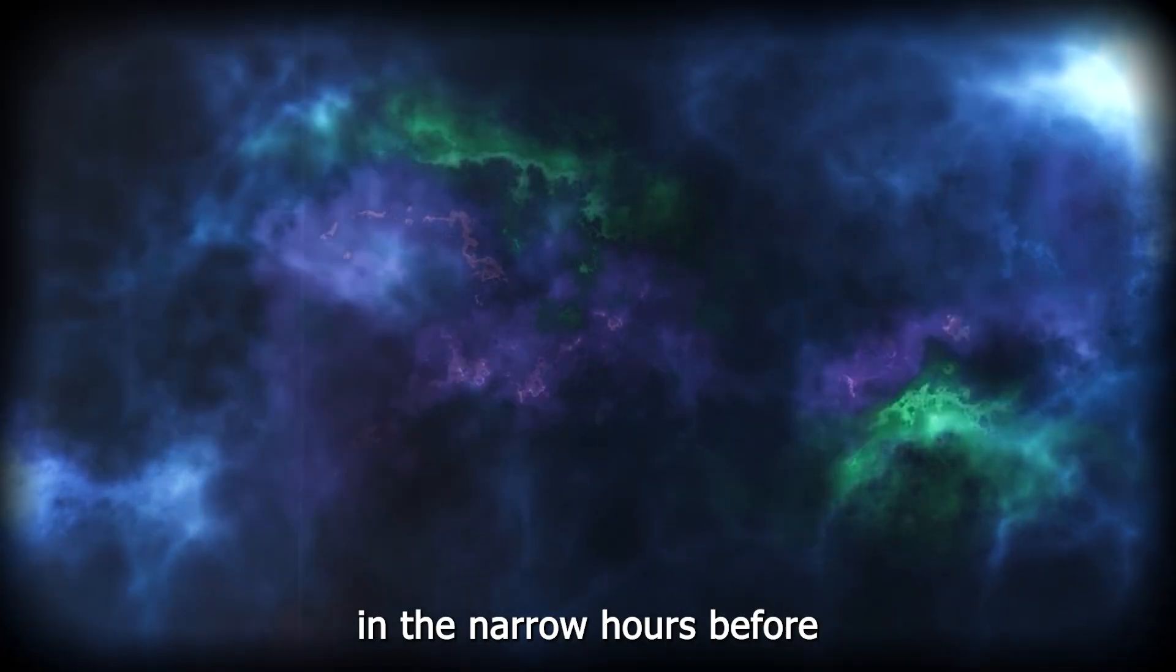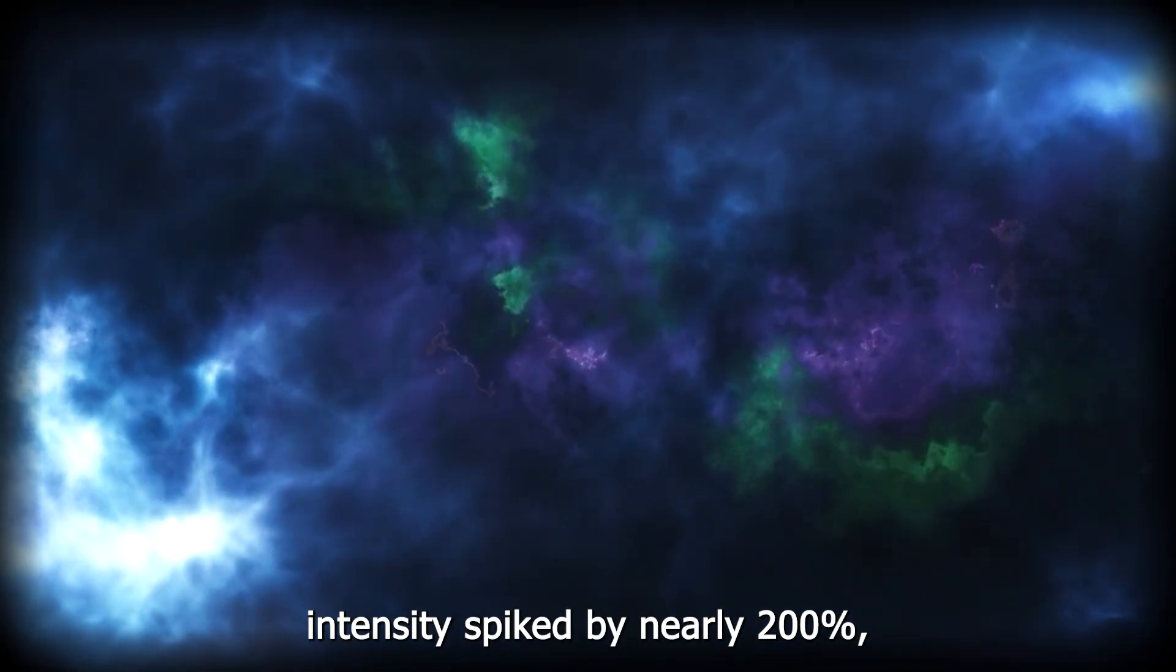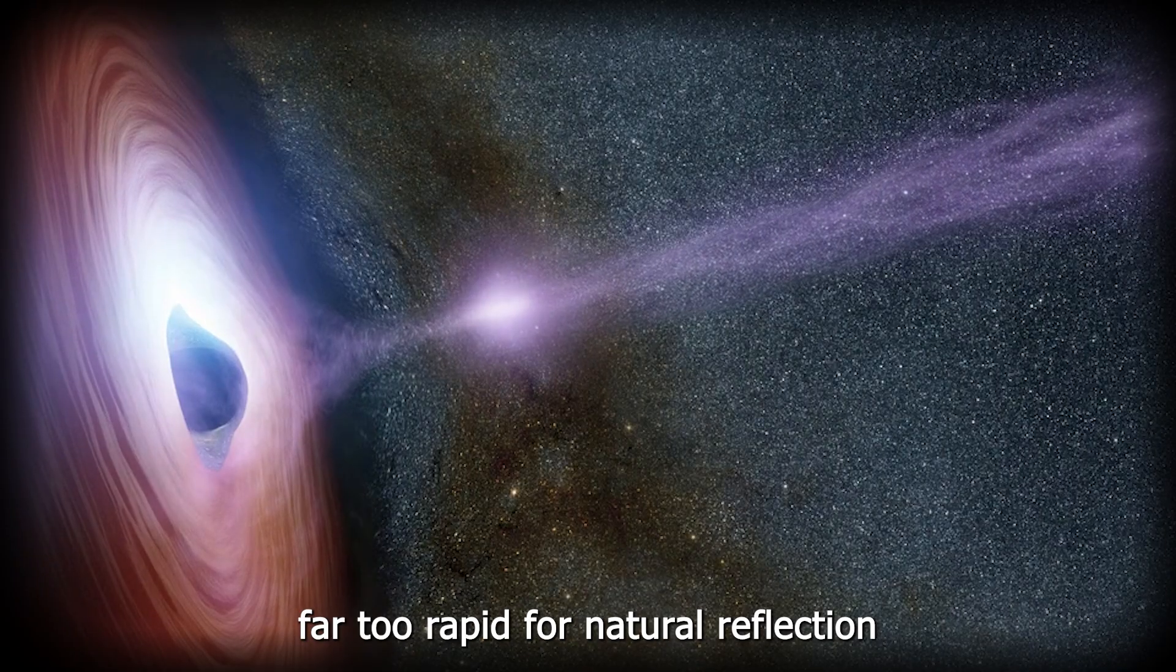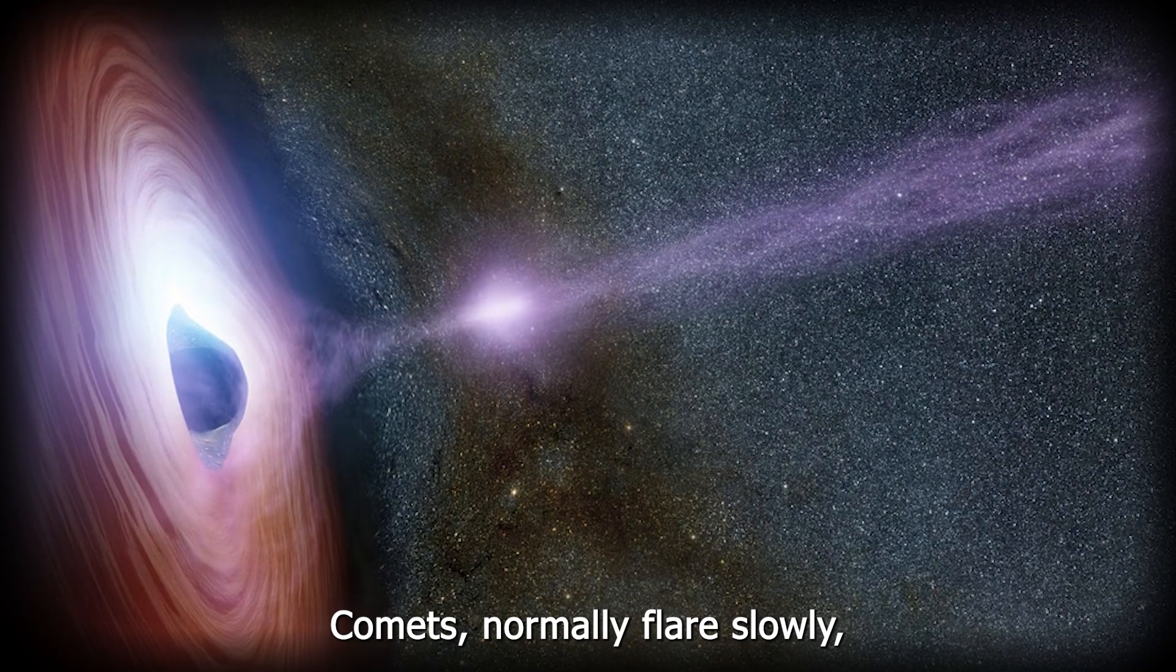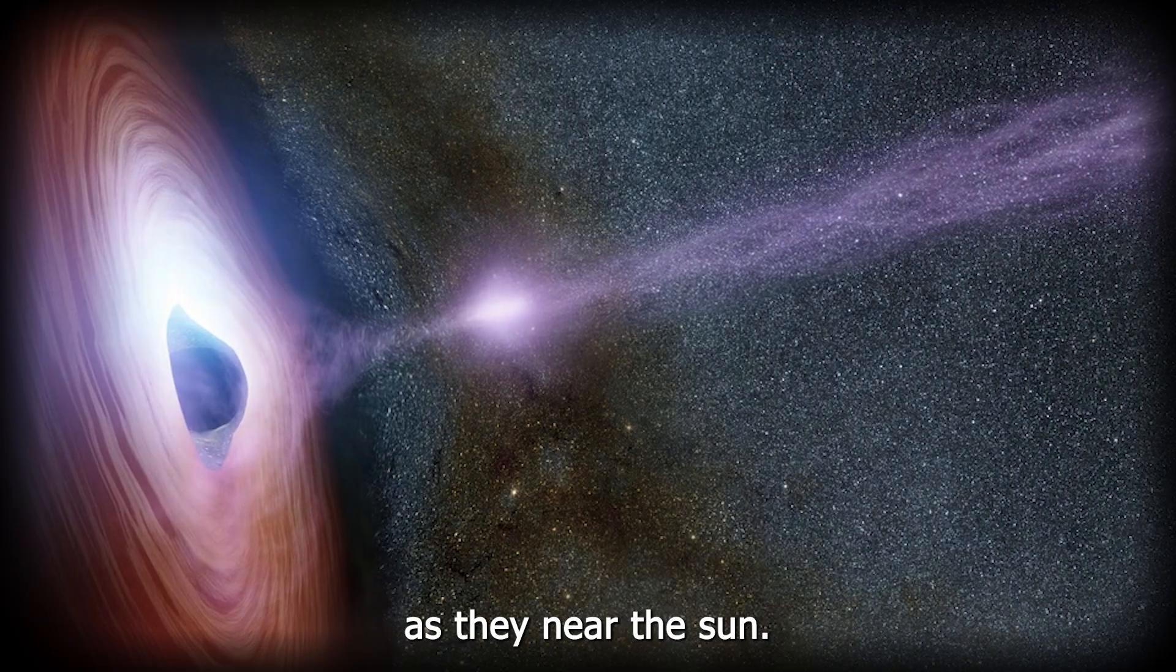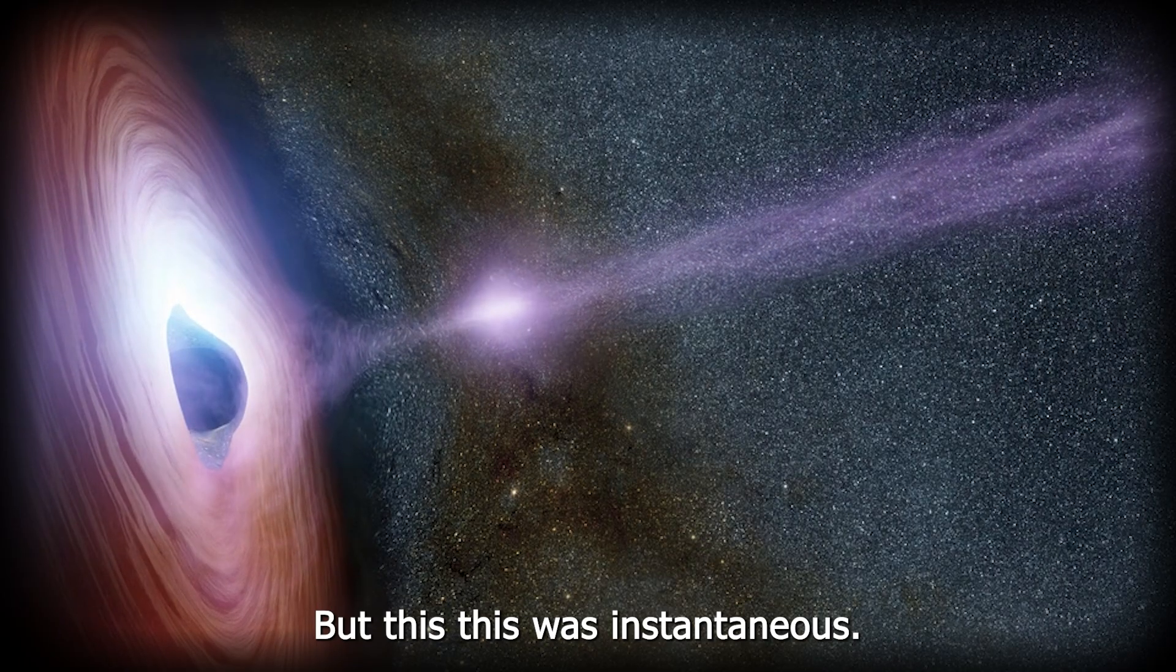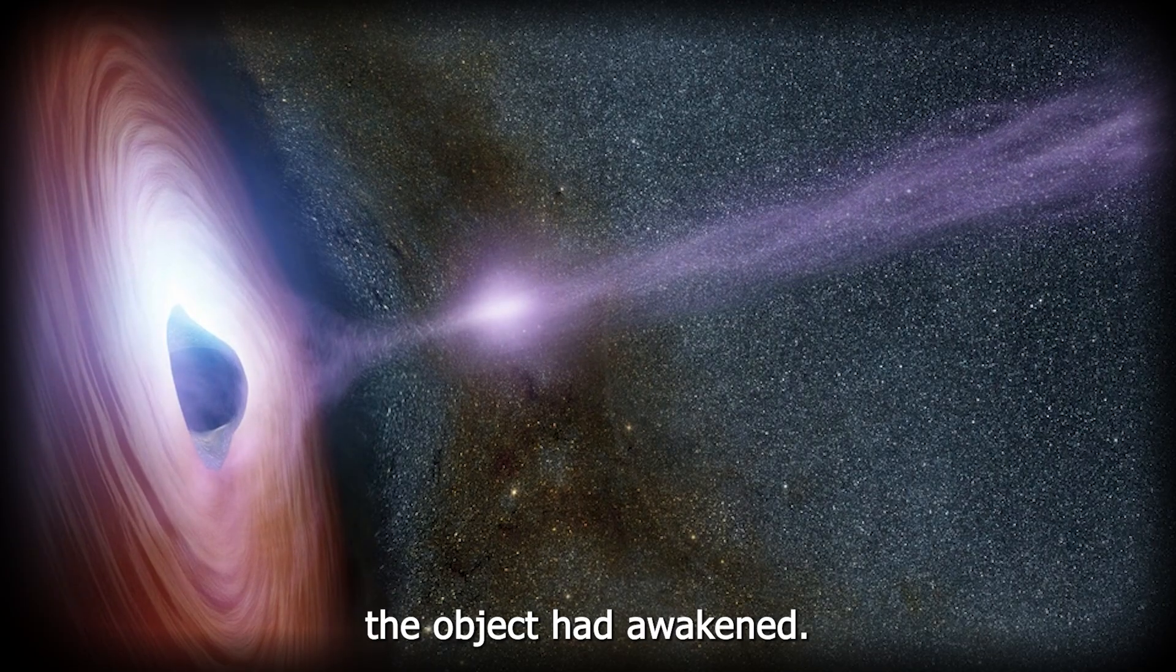In the narrow hours before and after perihelion, its light intensity spiked by nearly 200%, a rate far too rapid for natural reflection or outgassing. Comets normally flare slowly, their volatile ices vaporizing over days as they near the Sun. But this was instantaneous. A flash. A pulse. As if something inside the object had awakened.